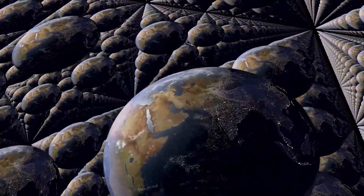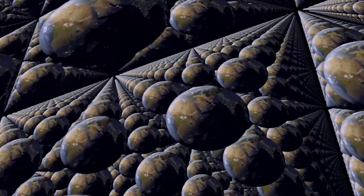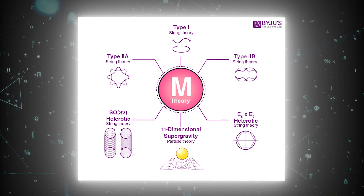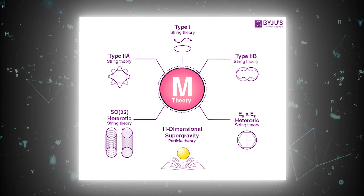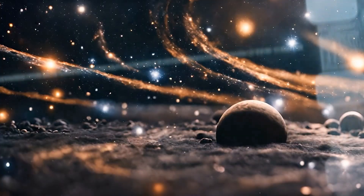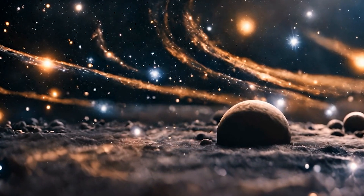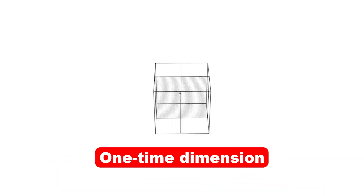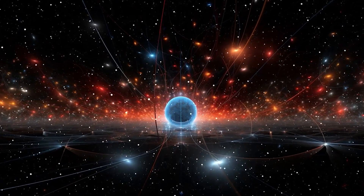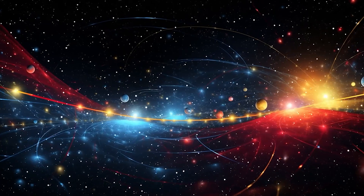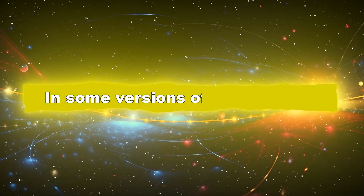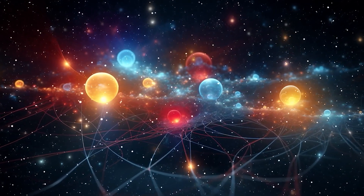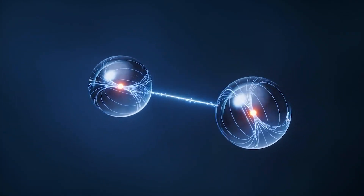Every possible outcome of every event exists in its own separate universe. String theory, a leading candidate for a theory of everything, suggests that our universe might be one of many. String theory requires the existence of additional dimensions beyond the familiar three spatial dimensions and one time dimension. These extra dimensions could harbor parallel universes, each with its own unique properties. In some versions of string theory, these universes are like bubbles floating in a higher-dimensional space, occasionally interacting or even colliding.